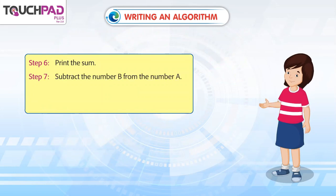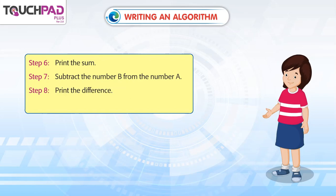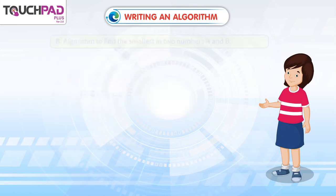Step 7: Subtract the number B from the number A. Step 8: Print the difference. Step 9: Stop.